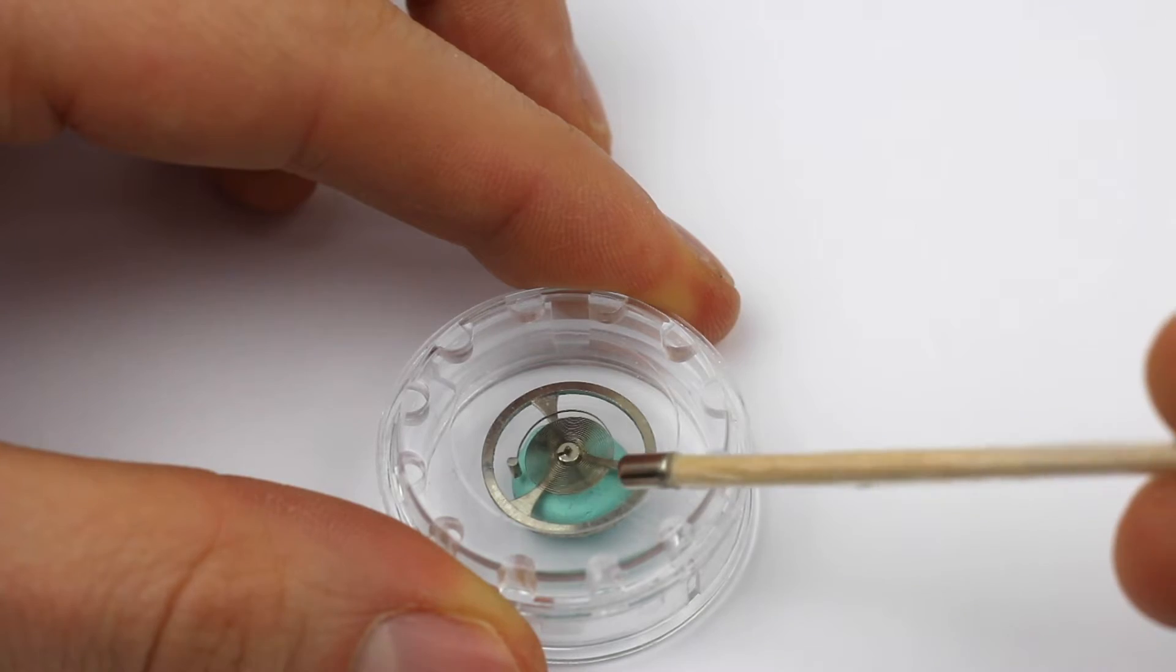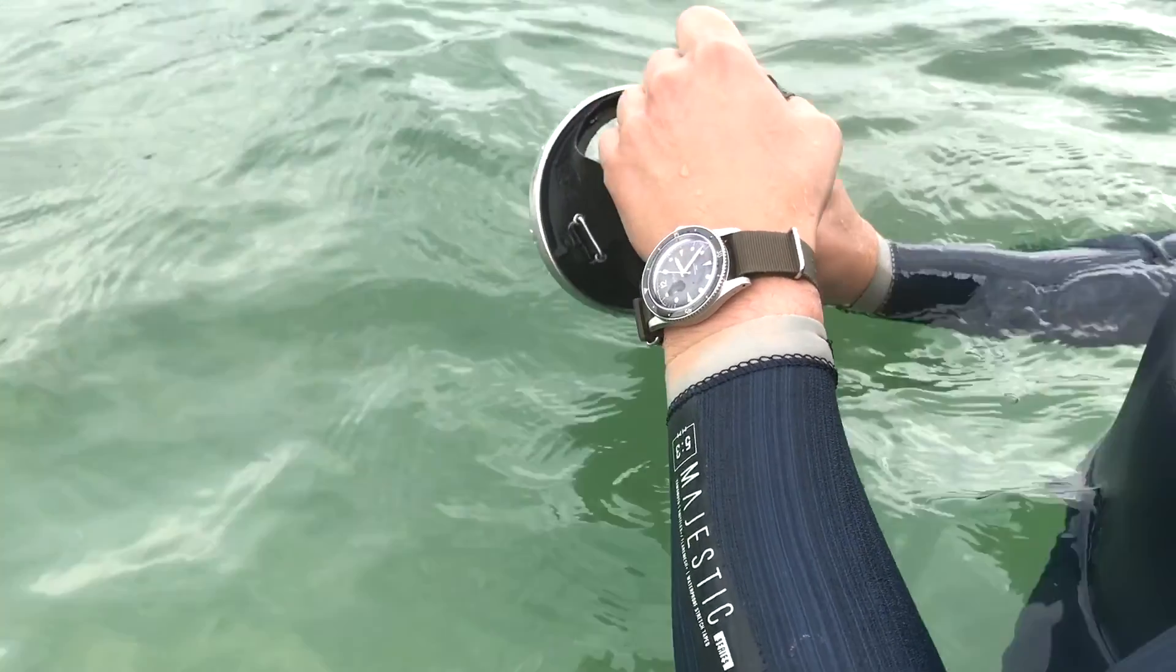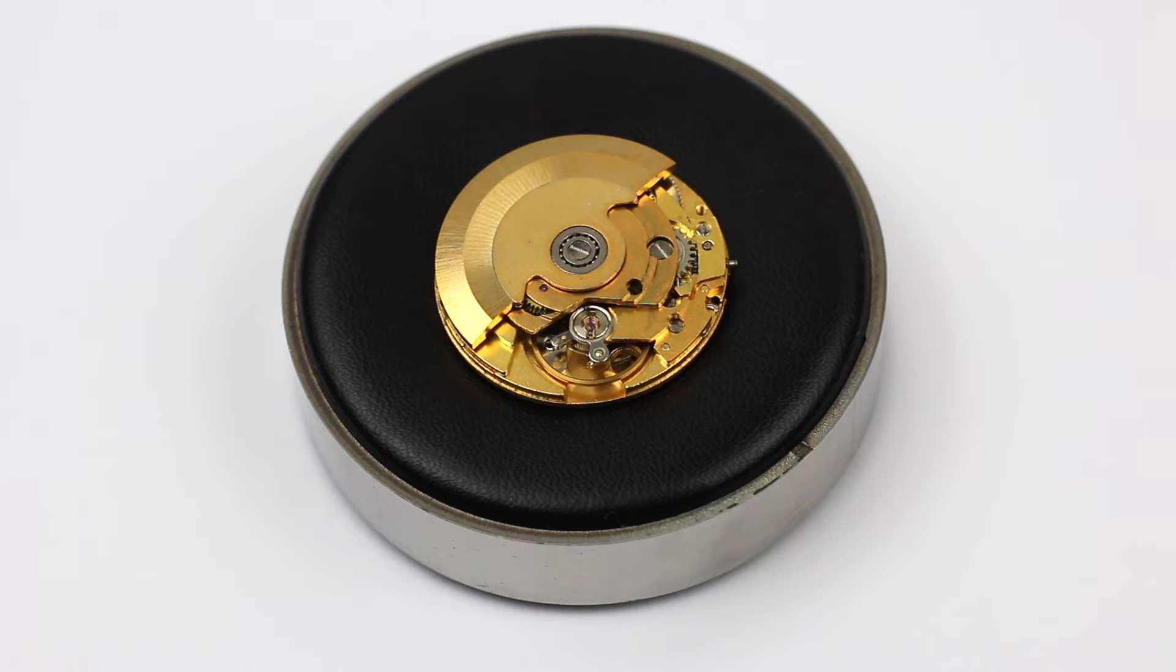I believe that magnetism together with water ingress and impacts and shocks are pretty much the three most threatening real-life circumstances to mechanical watches. Fortunately magnetism or the impact of magnetism on watches can in most cases be solved fairly quickly.